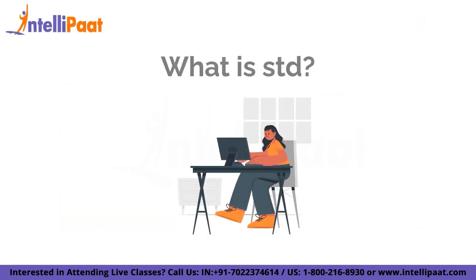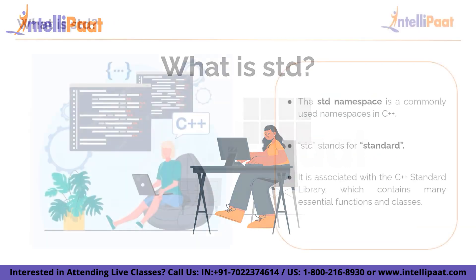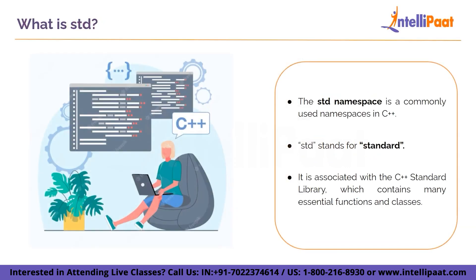Now let's have a quick overview of namespace std. The std namespace is one of the most commonly used namespaces in C++. Here std stands for standard, so std namespace at its core is the standard namespace. This standard namespace is a collection of classes, functions and objects provided as part of the C++ standard library. So when you encounter code like std::cout, std::cin, std::string and so on, the std part refers to the standard namespace.